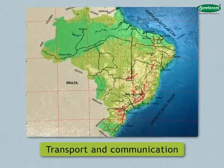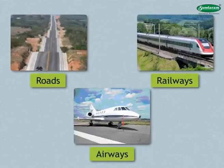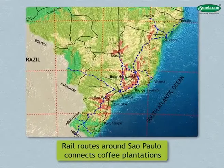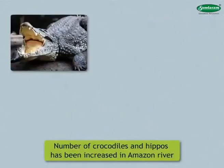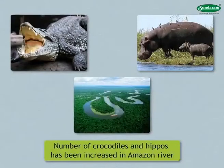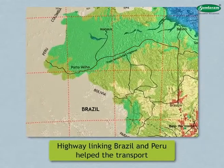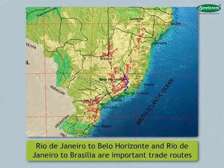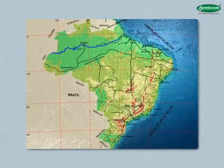A network of roads, railways, and airways has developed on the eastern coastal region. A number of rail routes have been constructed around Sao Paulo connecting the coffee plantations. Dense forests, deep valleys, and waterfalls, along with crocodiles and hippos, had previously limited the use of the Amazon for water transport. However, after the construction of a highway linking Brazil and Peru, transport in this area has become easier. A road running parallel to the Amazon river is also being constructed to its north.